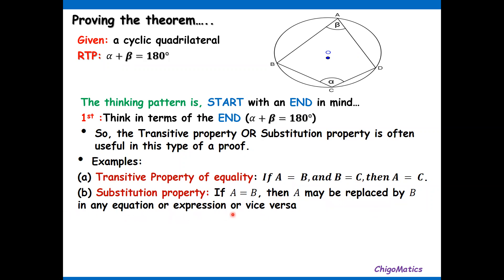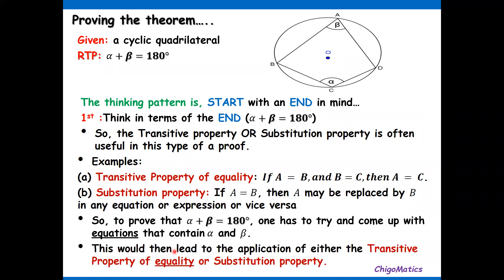So to prove that alpha plus beta equals 180, one has to try to come up with equations that contain alpha and beta. Why equations? Because this is an equality—we use an equal sign. Coming up with an equation is why we think in terms of coming up with equations. This will then lead to the application of either the transitive property of equality or substitution property.